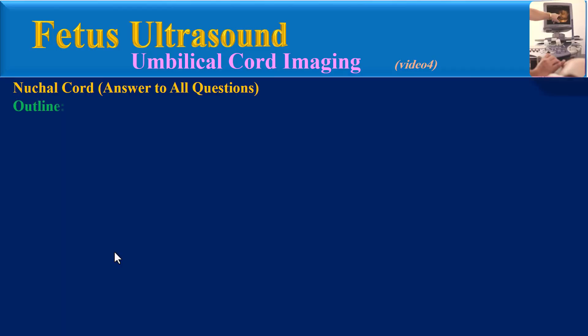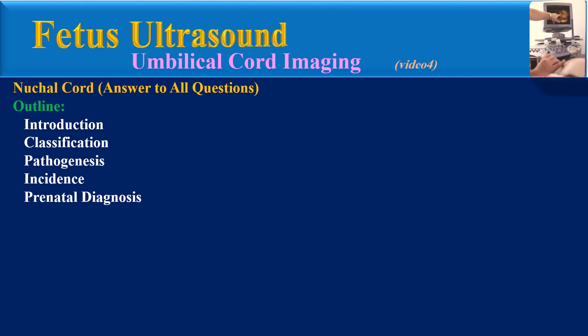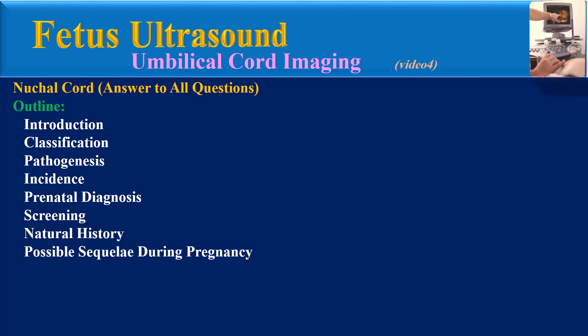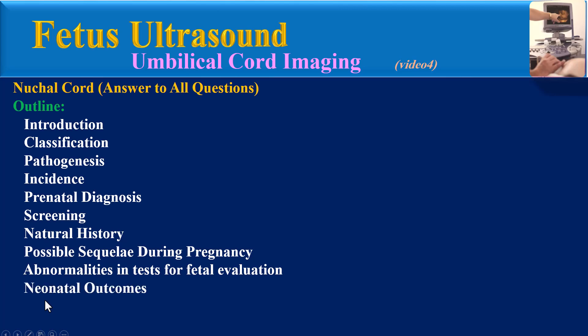The outline of this presentation includes: introduction, classification, pathogenesis, incidence, prenatal diagnosis, screening, natural history, possible sequelae during pregnancy, abnormalities in tests for fetal evaluation, neonatal outcomes, and final teaching points.